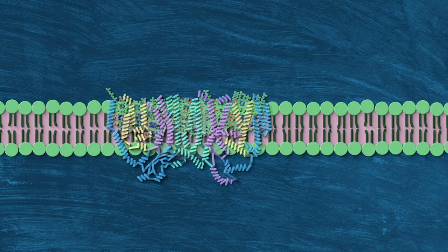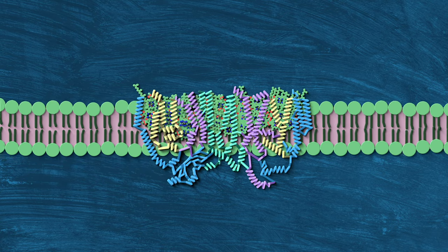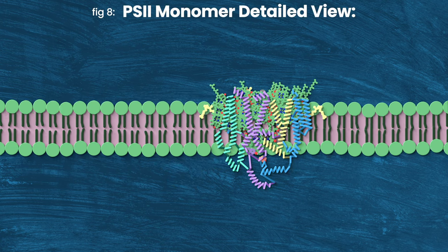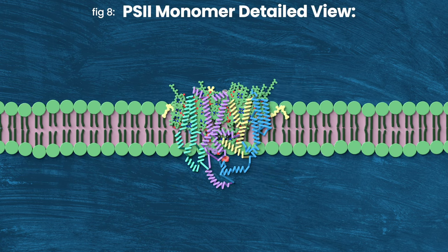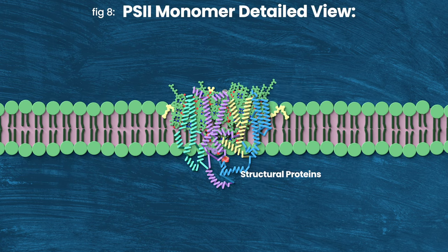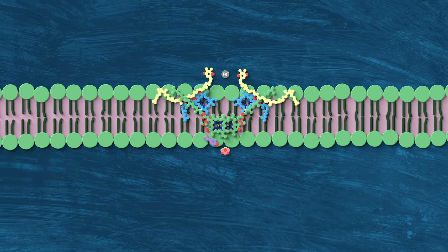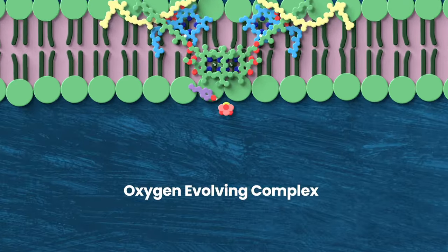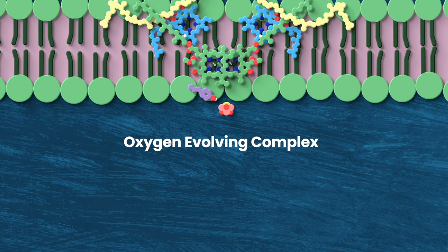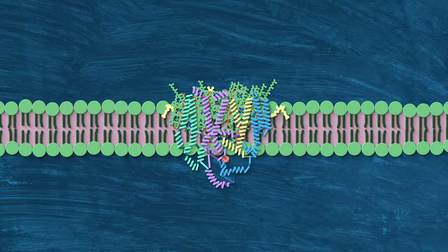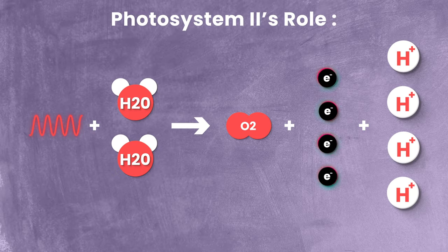I'm not going to be able to give you a comprehensive view of the whole structure of PS2, because it is immense, but we can break it into a few broad sections. You've got the structural proteins which hold everything in place, the antenna receptors, the reaction center, and then this little bunch of manganese, oxygen, and calcium called the oxygen evolving complex, or OEC for short.